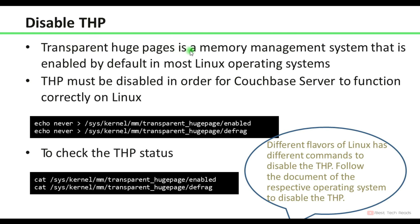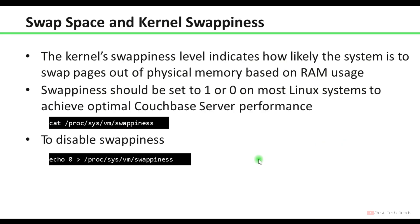THP is a memory management system that is enabled by default in most Linux operating systems. THP must be disabled in order for Couchbase Server to function correctly on Linux; you can disable it with the provided commands. Regarding swap space and kernel parameters, the kernel swappiness level indicates how likely the system is to swap pages out of physical memory based on RAM usage. Swappiness should be set to 1 or 0 on most systems to achieve optimal Couchbase performance. To disable swappiness, set it to 0.